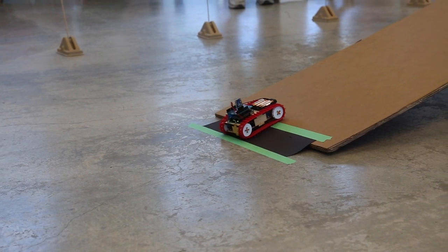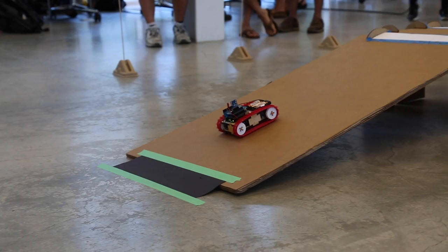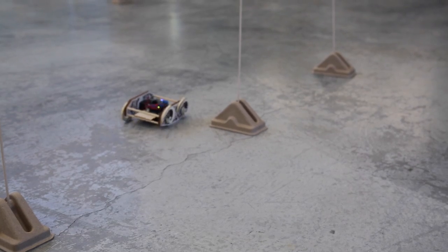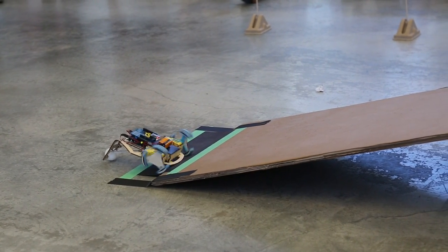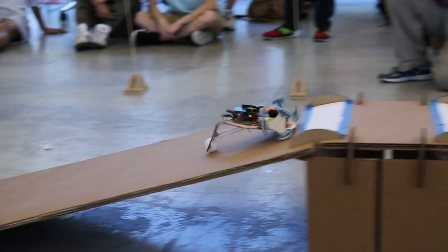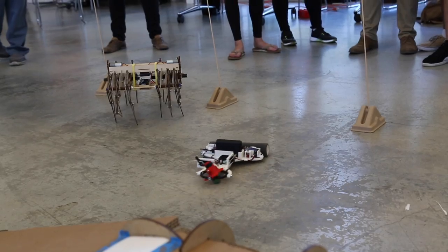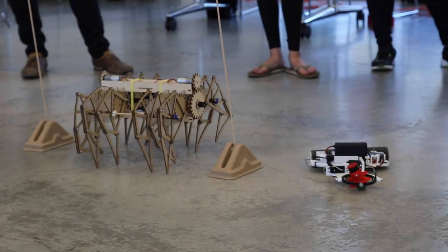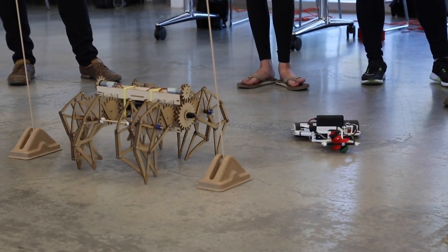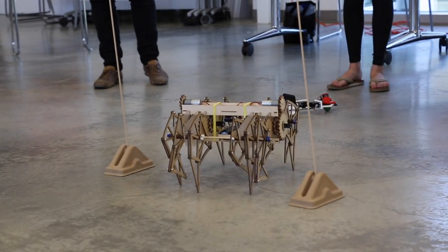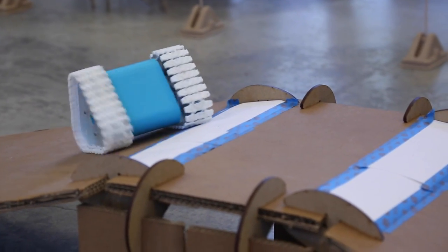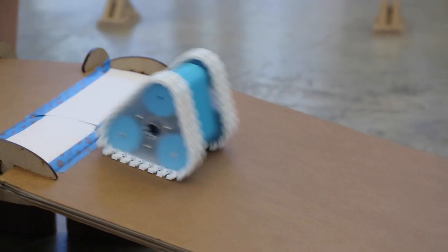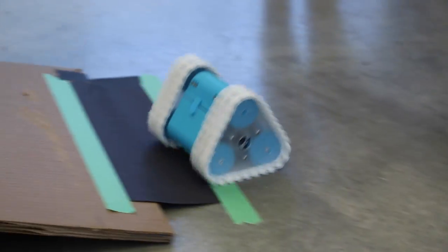The ramp of sorrows. And up to the ramp of sorrows. Now we have a staredown between the two robots. Look at that one-handed control. Okay, it's going down. Look at that control.